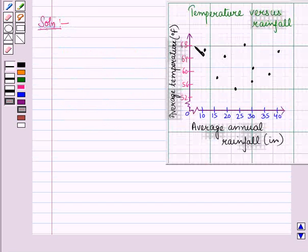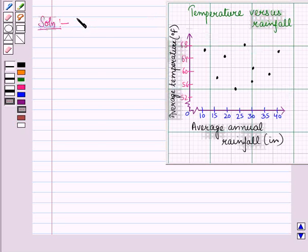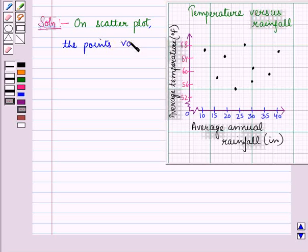Now let us start with the solution of the given question. In the first graph we are given average temperature on the vertical axis and average annual rainfall on the horizontal axis. On this scatter plot we see that the points vary a lot.